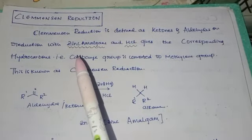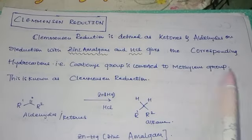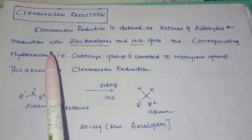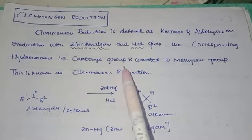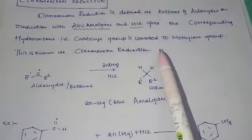Reduction with zinc amalgam and HCl gives the corresponding hydrocarbons. Remember that the carbonyl group is converted to methylene group. This is known as Clemmensen reduction.